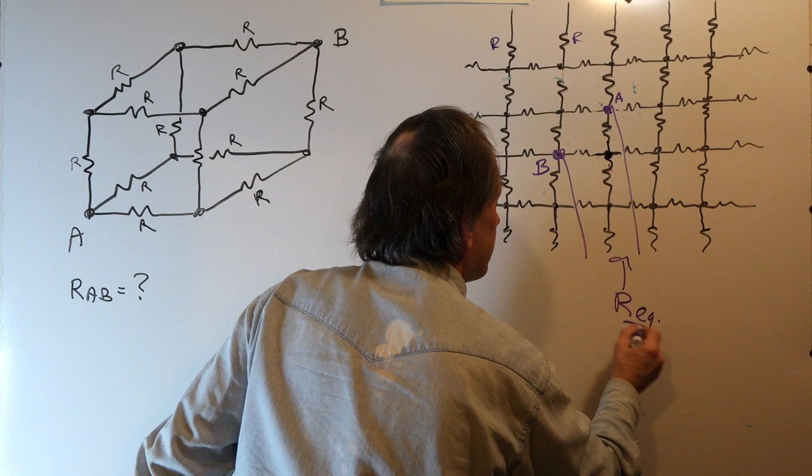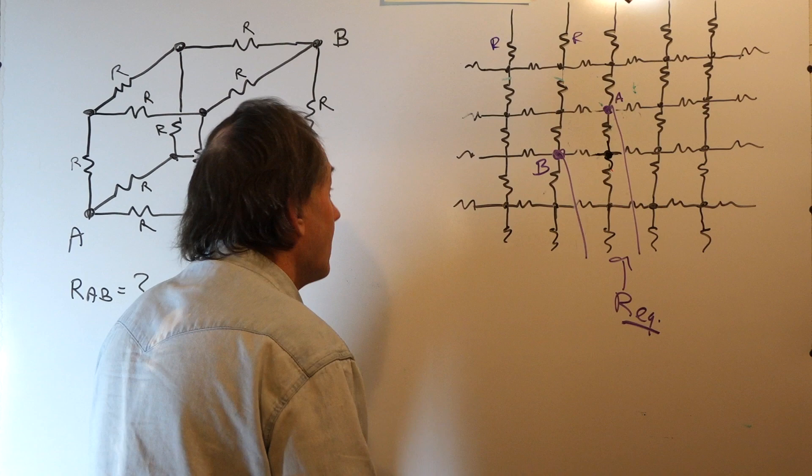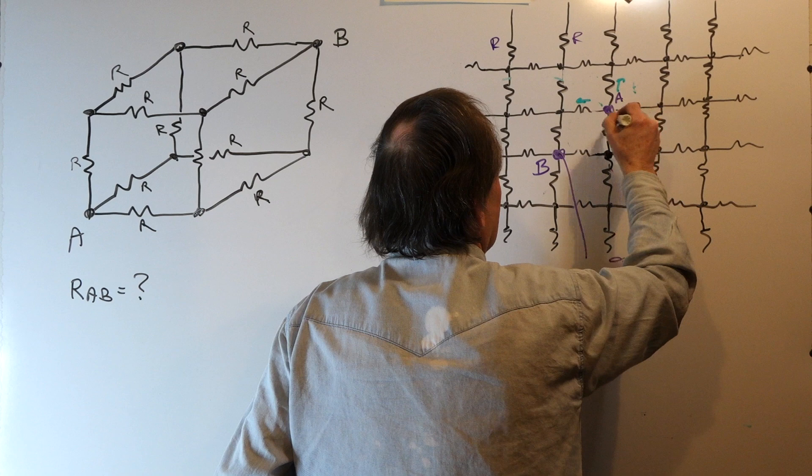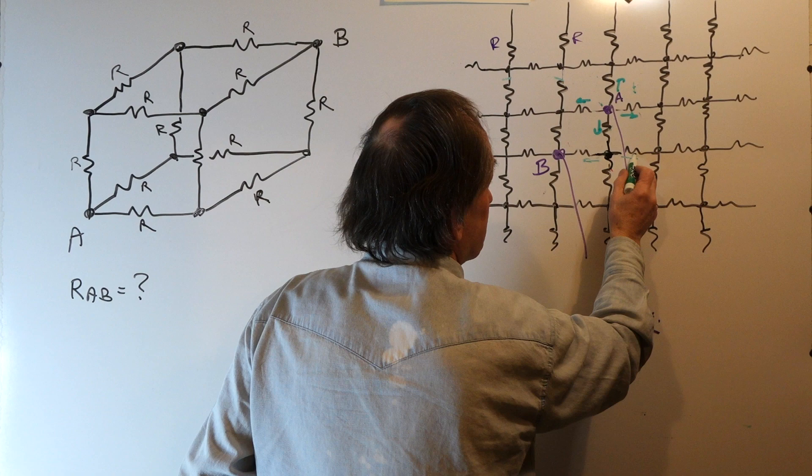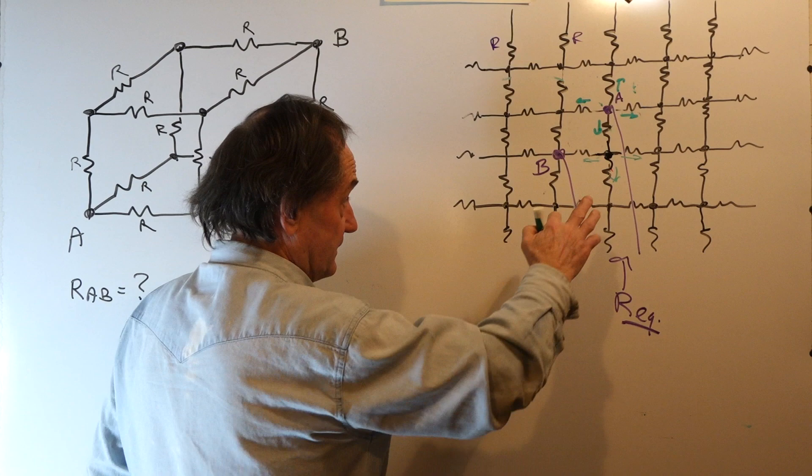Now, you can try using symmetry arguments if you want. It's not going to really get you anywhere, because you can source a current in. It's going to split equally, but you don't know what's going to happen to this current once it hits this node, how it's going to split. You cannot argue that it splits equally anymore, and it doesn't.